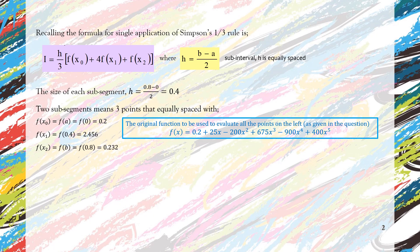Similarly, in the video where we solved the same problem using trapezoidal multiple application, the values are the same: f(x₀) = 0.2, f(x₁) = 2.456, and f(x₂) = 0.232.